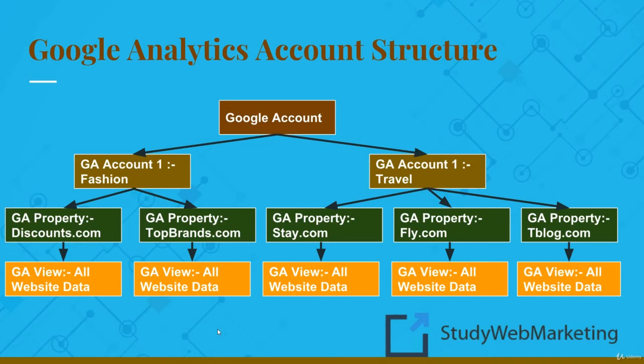As soon as you create a property, Google does by default create a view called 'All Website Data', and that is what you see in the tree diagram on your screen — All Website Data under each of the properties. This view by default will capture all data that is coming to your property, and ideally you should not tamper with this view.